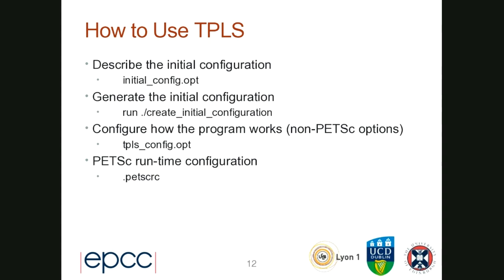Now I've told you about the sort of things you can do with TPLS, and I'm going to talk about how you actually use it. In order to run the code, you need to do some configuration before runtime — there are two parts to that: describing the initial configuration and generating the initial condition for your problem. Then at runtime, there are two parts: specifying the non-PETSc options that control how the program runs, and specifying the PETSc runtime configuration. We'll go through these in order.